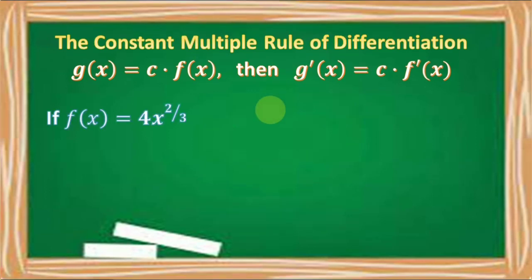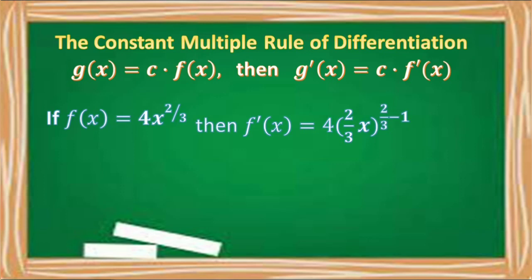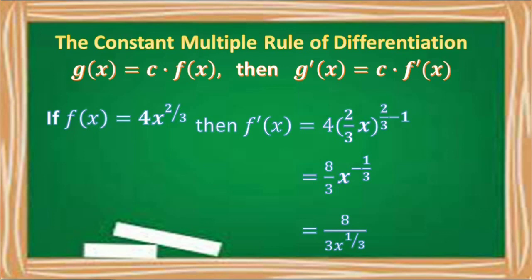If we have f of x is equal to 4x raised to 2 thirds, then its derivative is equal to 4 times 2 thirds x raised to 2 thirds minus 1, which is equal to 8 thirds x raised to negative 1 third. Moving x raised to negative 1 third to the denominator, we have 8 over 3 times x raised to 1 third. For our final answer, we convert the rational exponent to radical form: 8 over 3 times the cube root of x.